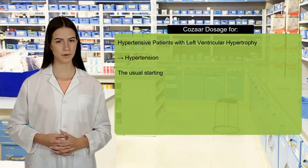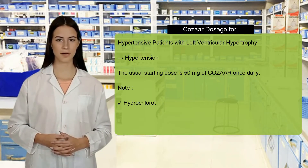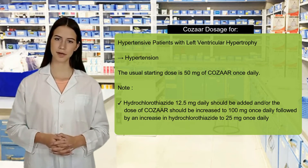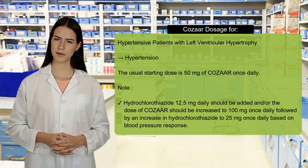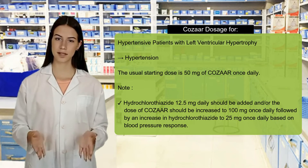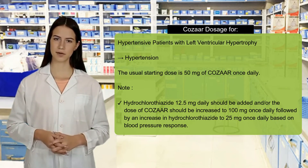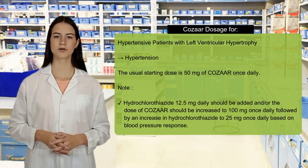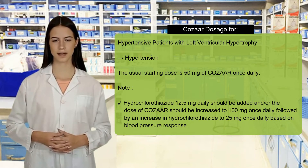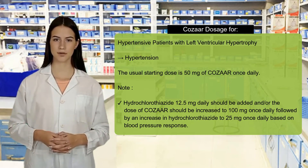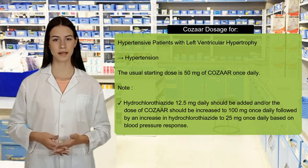Dose for hypertensive patients with left ventricular hypertrophy: the usual starting dose is 50 mg of Cazara once daily. Hydrochlorothiazide 12.5 mg daily should be added and/or the dose of Cazara should be increased to 100 mg once daily, followed by an increase in hydrochlorothiazide to 25 mg once daily based on blood pressure response.